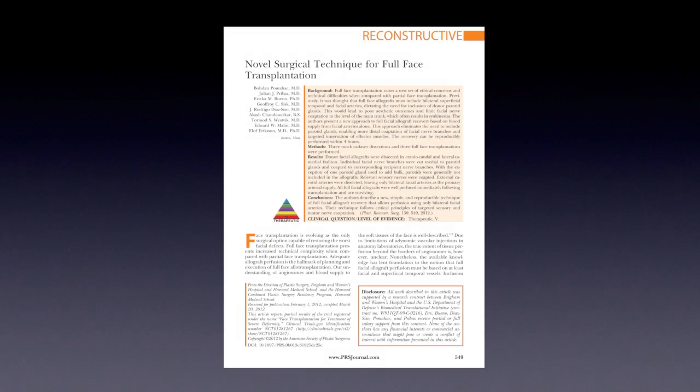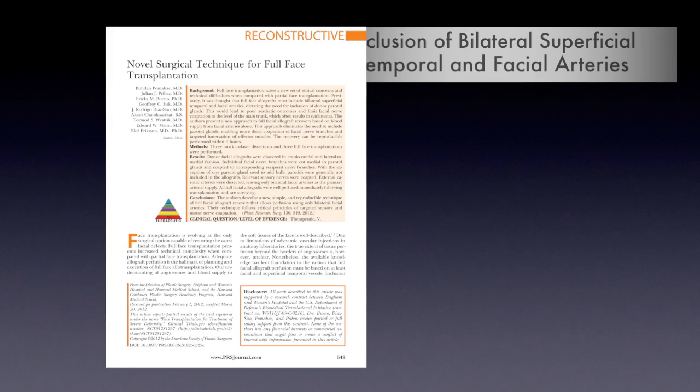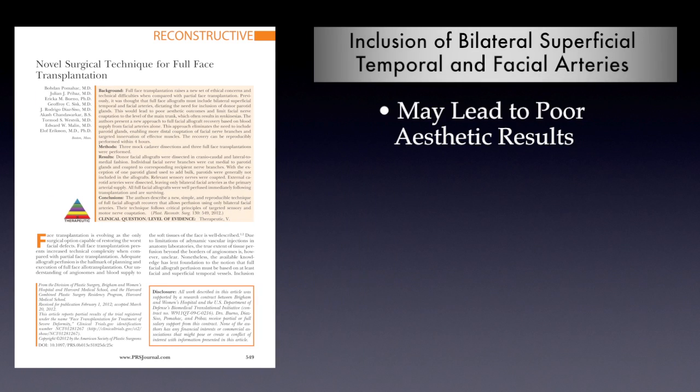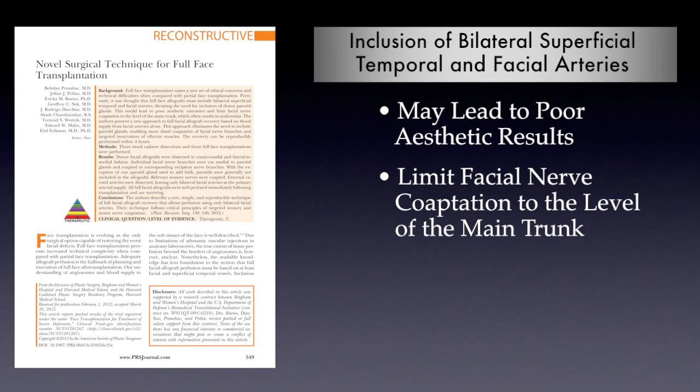The literature has described the need for inclusion of bilateral superficial temporal and facial arteries, which ultimately demands the need for inclusion of the parotid glands during facial procurement. The authors of this manuscript state that this may lead to poor aesthetic results, limit facial nerve coaptation to the level of the main trunk, and add considerable operative time.